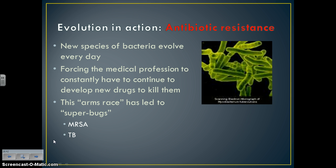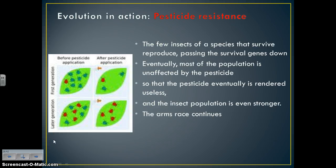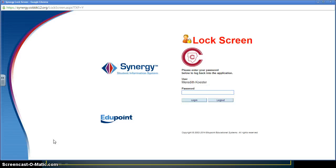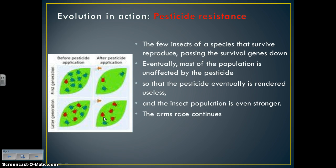This has led to an arms race — we're always trying to beat these superbugs. An example of a superbug is MRSA, which is a medicinally resistant staph infection. The same idea applies to pesticide resistance: pests that can resist chemicals survive, reproduce, and pass that immunity to future generations.